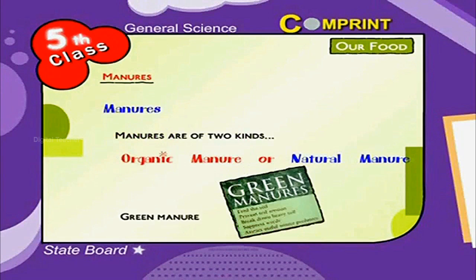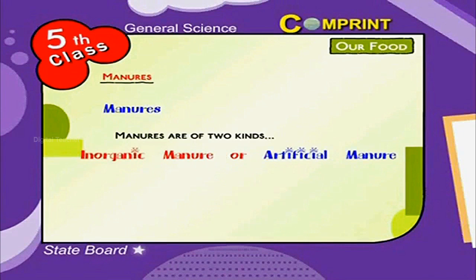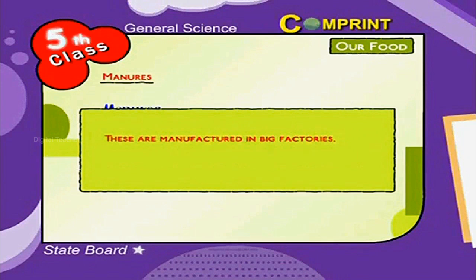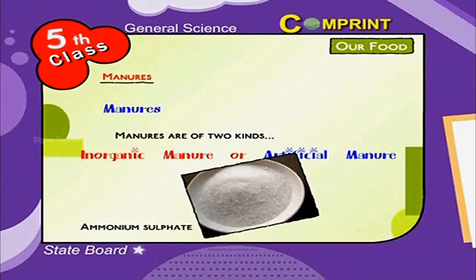Examples of natural manures are cattle dung, grain manure and sun hemp. When natural manures are not available, farmers use inorganic or artificial manures. These are manufactured in big factories. For example, urea and sulphate.